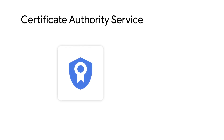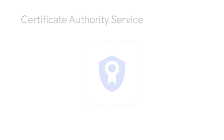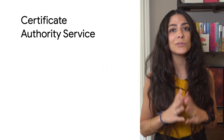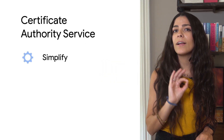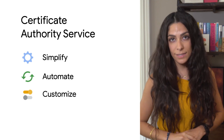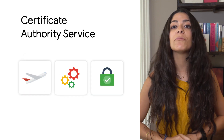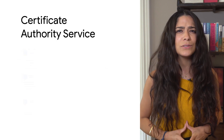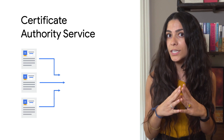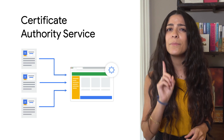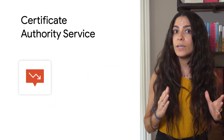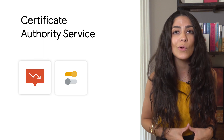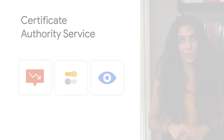Cue Certificate Authority Service, which can replace Mesh CA. CAS is a highly-available, scalable service that enables you to simplify, automate, and customize the deployment, management, and security of private certificate authorities, or CAs. It allows you to converge all of your certifications and CAs into a single management pane to reduce your risk and increase the control and visibility over the operations in your org.